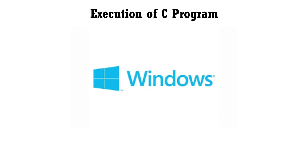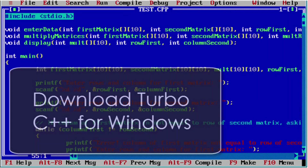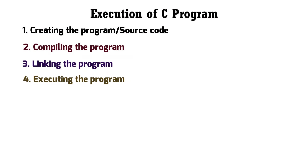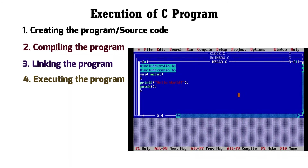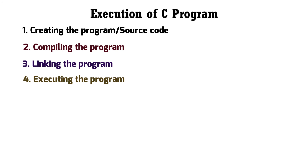Now let us understand the steps to execute C programs in a Windows system. I will be using the Turbo C compiler, which is supported in the Windows operating system. We will understand the four steps using Turbo C. In this video you will see how to create a C program, how to compile it, and how to run the program.